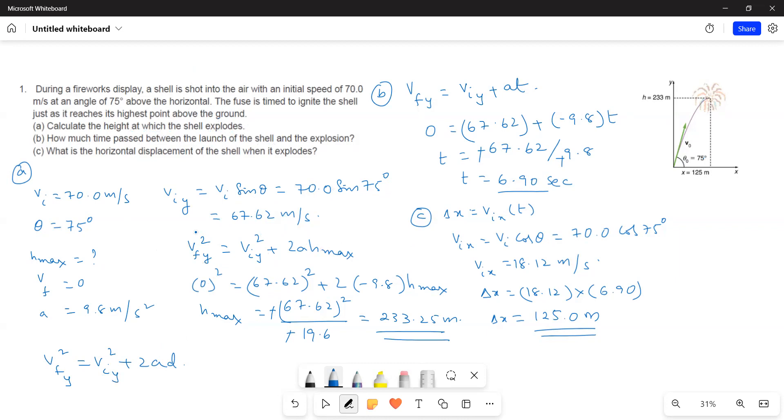At the maximum height the velocity becomes 0, therefore I will plug in the value for the initial velocity and then the acceleration. I take the G value 9.8, and as it is going up the velocity decreases so the acceleration will be negative. H maximum is equal to 233.25 meters. This is the answer for the A bit.